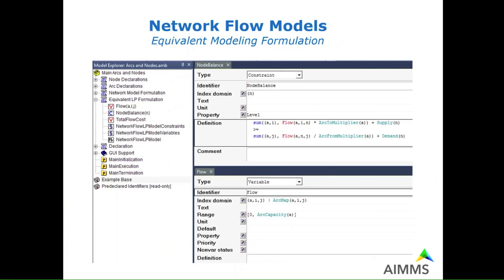These kinds of models also have an equivalent linear programming formulation. The same model can be formulated using explicit constraints like the node balance constraints, or explicitly declared variables like the arc flow variable over each arc. This LP reformulation is solvable by using standard solvers like CPLEX — either by using standard linear programming methods, or in some cases you can even choose for CPLEX to run a network algorithm followed by either primal or dual CPLEX.